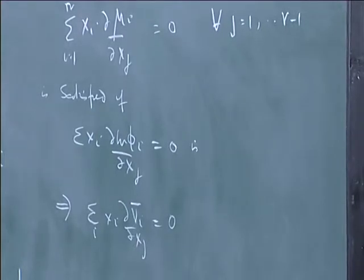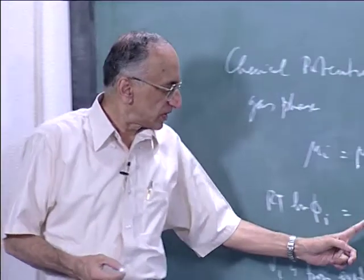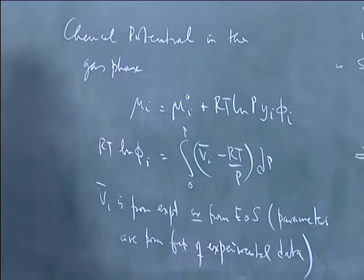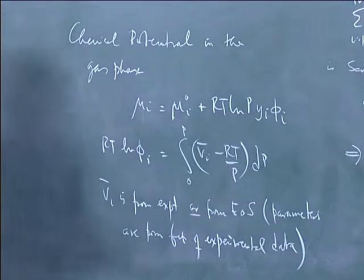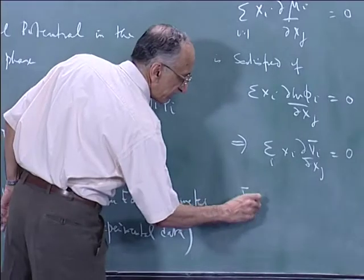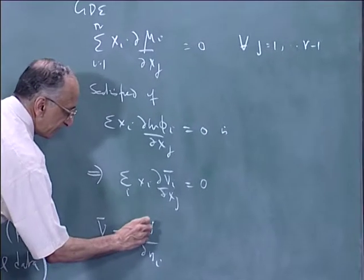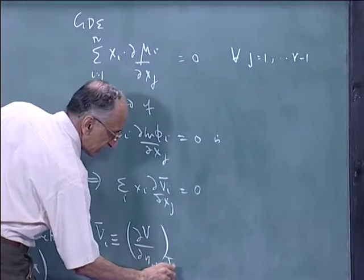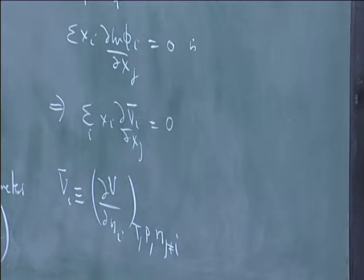As far as the gas phase is concerned, while the Gibbs-Duhem equation is central to the determination of composition dependence of the chemical potential, we do not worry about it because we take v_i_bar from experimental data or from equations of state. When you take it from an equation of state, v_i_bar is derived from the expression for V by its definition: v_i_bar is simply the partial of V with respect to n_i at constant T and P. So the v_i_bars will automatically satisfy the Gibbs-Duhem equation.